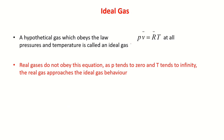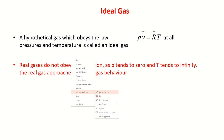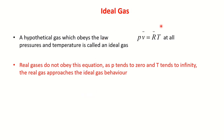Let us look at ideal gas as a hypothetical gas. A gas which obeys the law PV̄ = R̄T at all pressures and temperatures is called an ideal gas. If a gas does not obey this equation, it is a real gas. A real gas approaches ideal gas behavior when pressure becomes very low and temperature becomes very high.